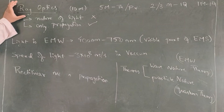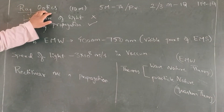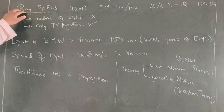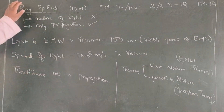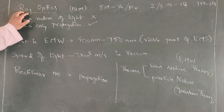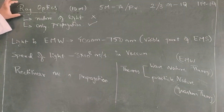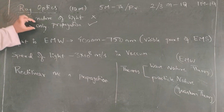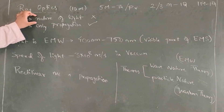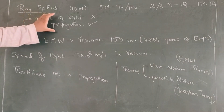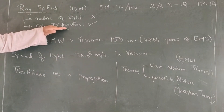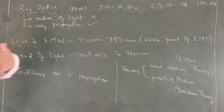What does Ray Optics mean? Optics basically deals with something called light itself. Ray Optics is a branch of physics which deals with the study of propagation of light and it does not consider the nature of light. Let us understand these two points. What do you mean by propagation? Propagation means travelling.